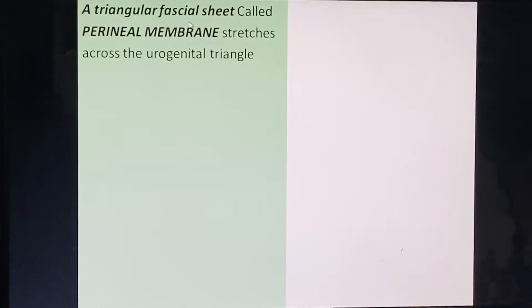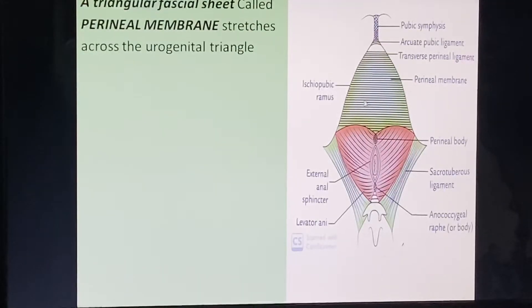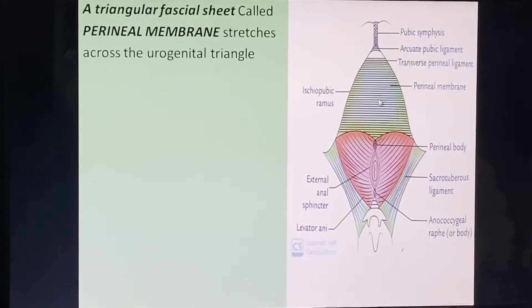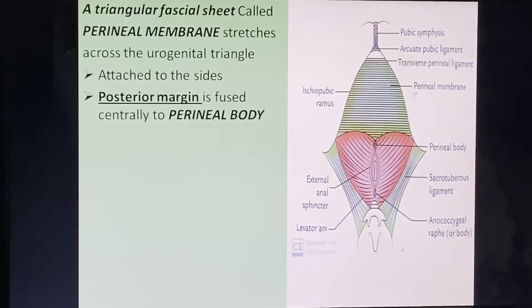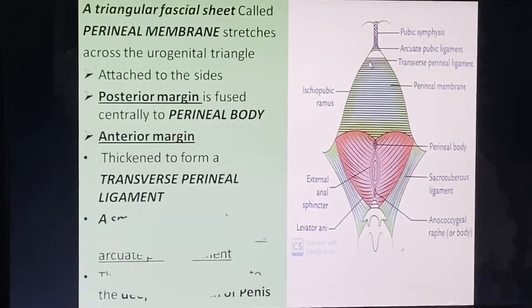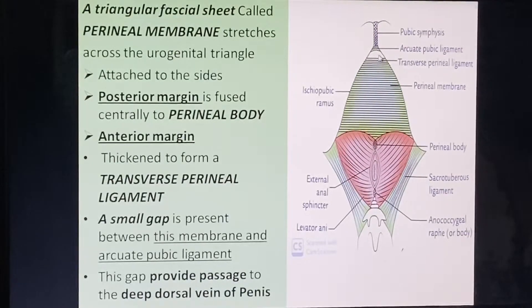A triangular fascial sheet called the perineal membrane stretches across the urogenital triangle. It is attached to the sides; the posterior margin is fused with the perineal body, and the anterior margin is thickened to form the transverse perineal ligament. A small gap is present between the arcuate pubic ligament and this membrane, providing passage to the deep dorsal vein of the penis.